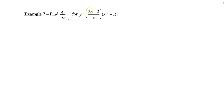We have this function here, which is actually a product, but the first piece of the product is also a quotient. To find dy/dx, we're going to use the product rule, which states that we first take the derivative of the first piece. Remember that first piece is actually a quotient.